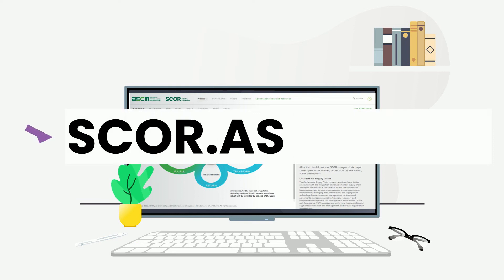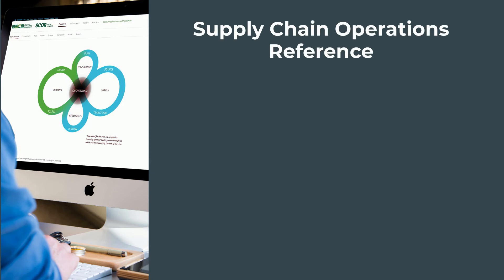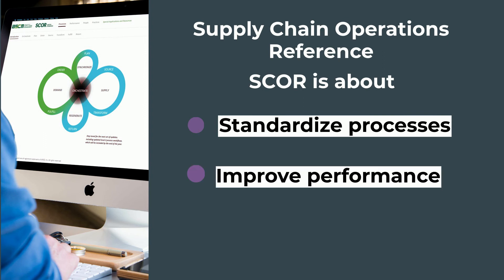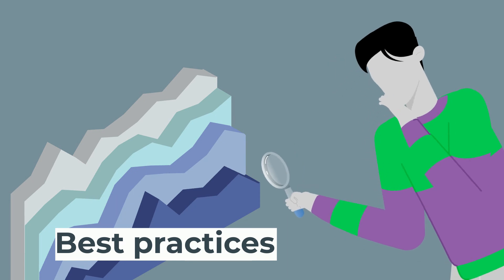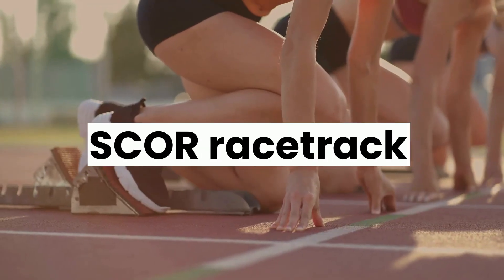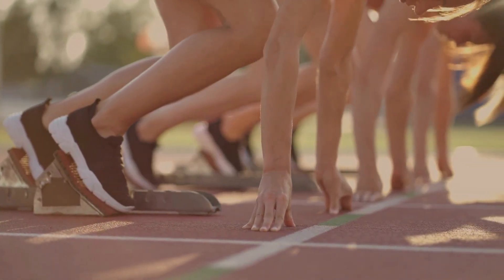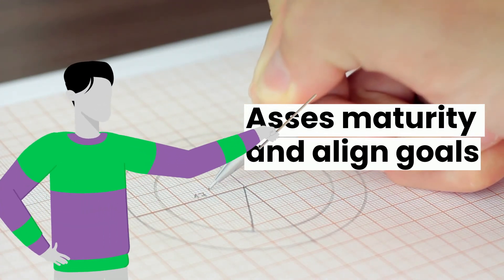To access, go to scor.ascm.org. In short, the Supply Chain Operations Reference — known as SCOR — model is developed to standardize processes and performance metrics to improve supply chain performance. These metrics can be used to find areas for improvement, which can then be addressed using best practices. The SCOR model also includes a standard approach called the racetrack to keep improving any supply chain. Businesses can use the SCOR model to assess supply chain maturity in alignment with their business goals.